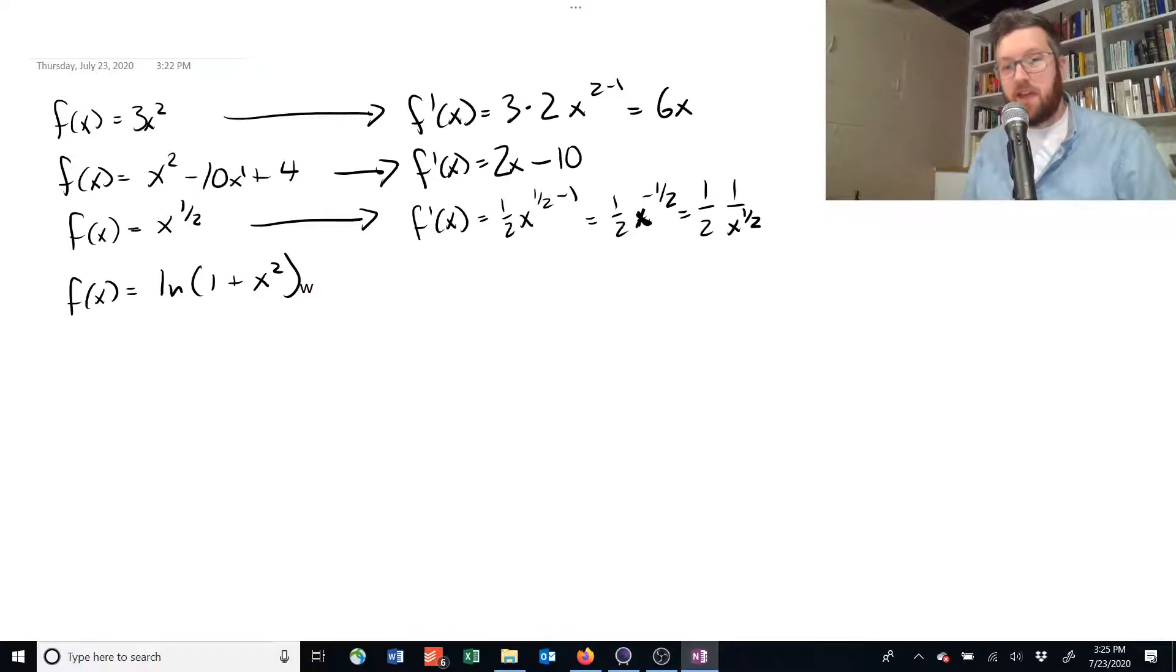Or 1 over 2 to the 1 over x to the 1 half. And then x to the 1 half also has a special notation. You probably know 1 over 2 times the square root of x. Okay, x to the 1 half, you can also write that way. Last one, this guy we're going to need to use the chain rule.